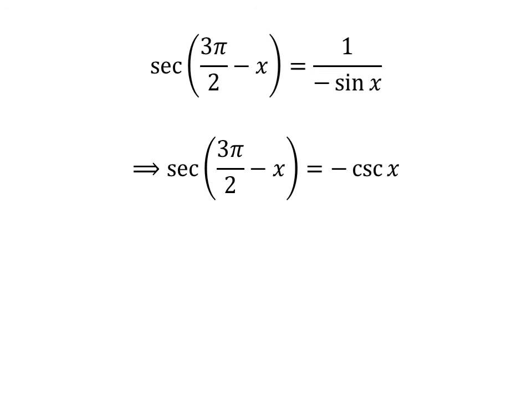As 1 over sine of x equals cosecant of x, secant of 3 pi over 2 minus x equals negative cosecant of x.